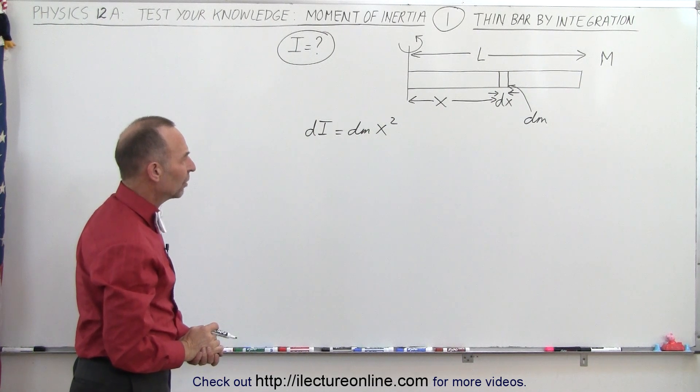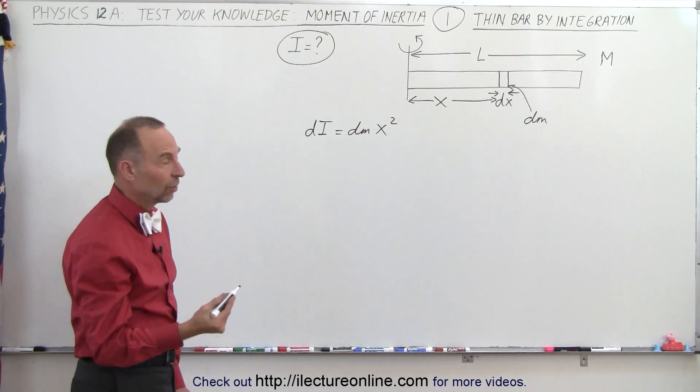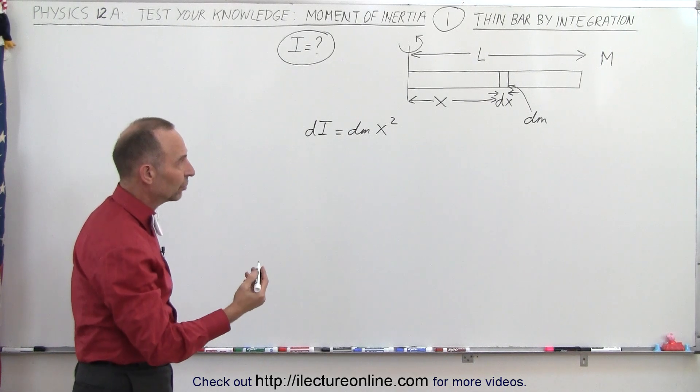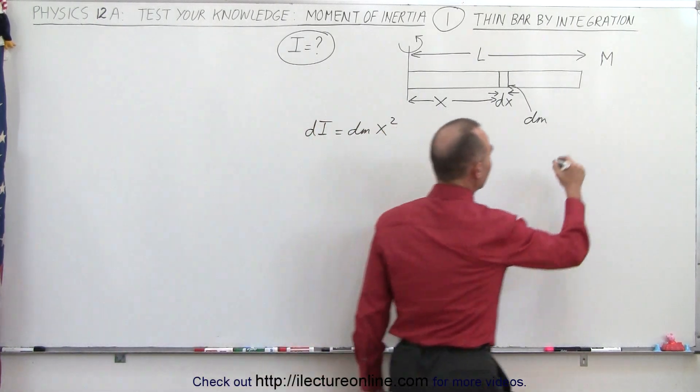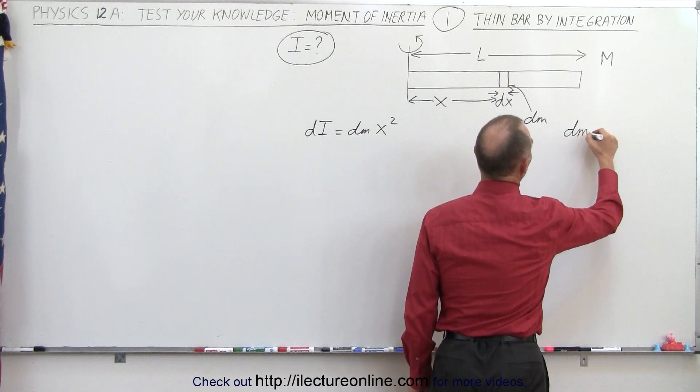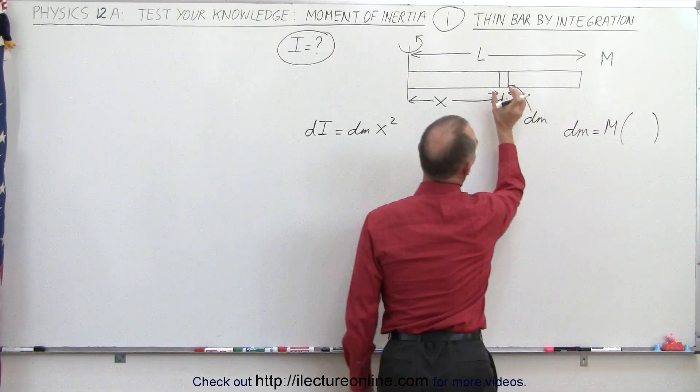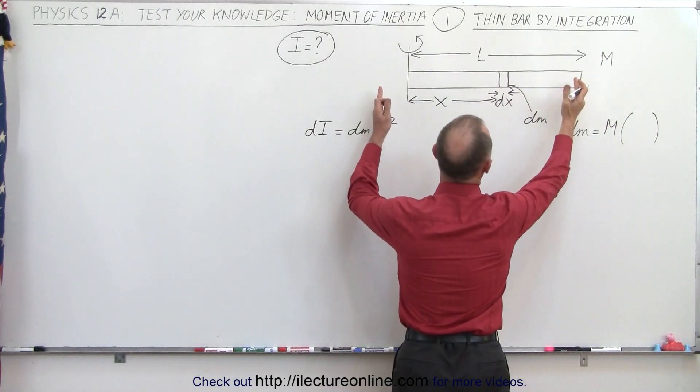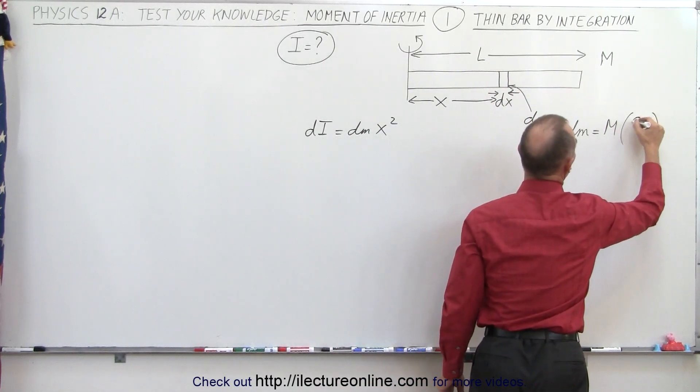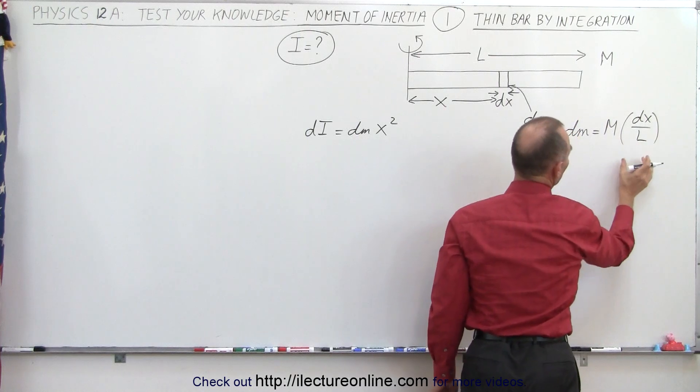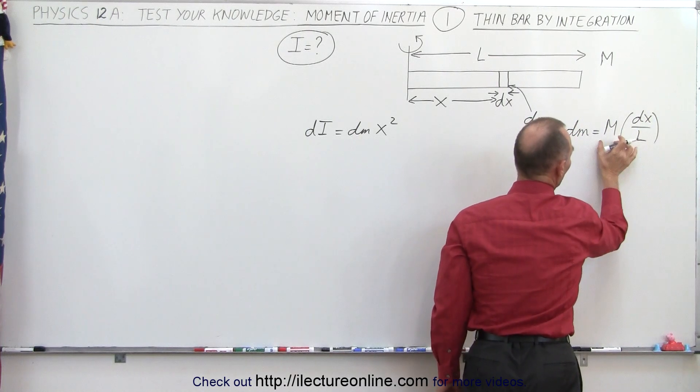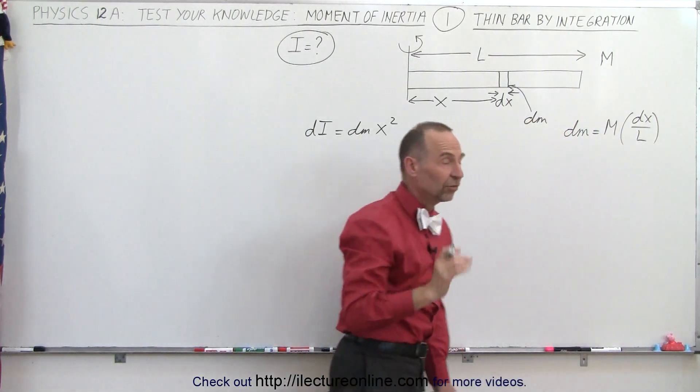What we need to do now is somehow relate dm to dx. So we want to know what dm is equal to, and we can say that dm is equal to the mass of the whole bar times the ratio of the length of the segment compared to the length of the whole bar. So that ratio would be dx divided by L.